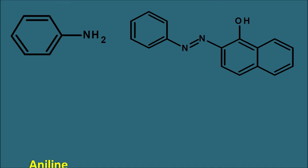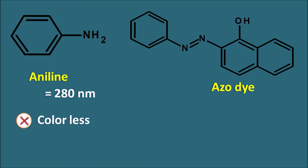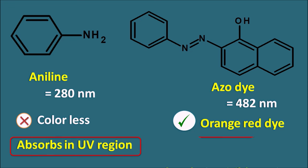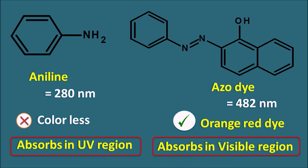Now let us take two more examples: aniline and an azo dye formed from aniline by diazotization and coupling with beta-naphthol. We have already seen that aniline shows a peak at 280 nm — it is a colorless compound because it does not absorb within the visible region of 400 to 800 nm. On the other hand, the azo dye shows a peak at 482 nm, which is in the visible region, so this compound shows color and an orange-red dye is produced. Both compounds have chromophores, but aniline has a chromophore absorbing within the UV region whereas the azo dye has a chromophore absorbing in the visible region. Sometimes the chromophore can be modified such that it undergoes extended conjugation, increasing the capacity of the chromophore.